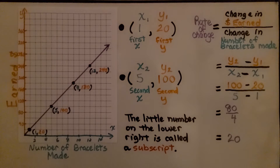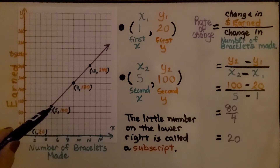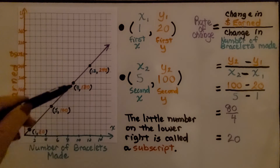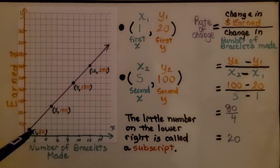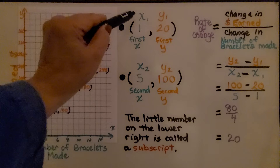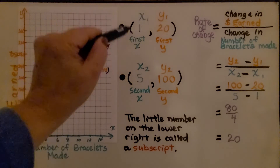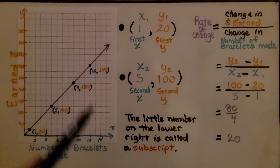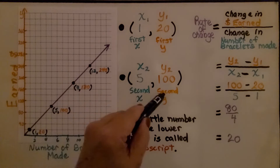Using the data from the table, we plot the points and connect them with a line. We have x = 1 and y = 20, and x = 5 and y = 100, along with a couple of other ordered pairs. We can use these two to find the rate of change. The first point gives us x₁ = 1 and y₁ = 20, and the second gives us x₂ = 5 and y₂ = 100.